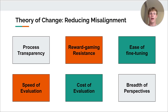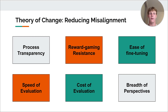I will now briefly touch on our theory of change. Society wants AI models to do what they are intended to do. The automated parliament facilitates this goal by allowing AI to make better aligned decisions, with several key advantages over both conventional and ML alternatives, as shown on the slide.